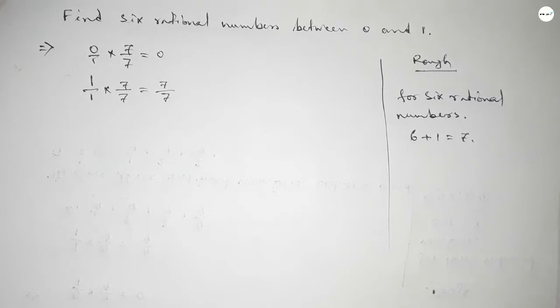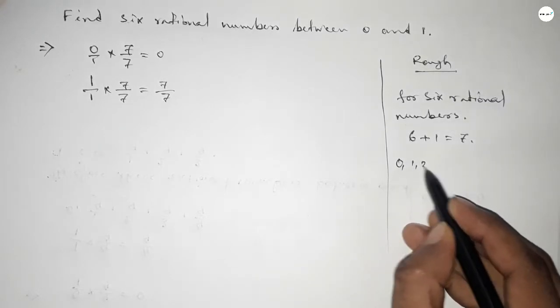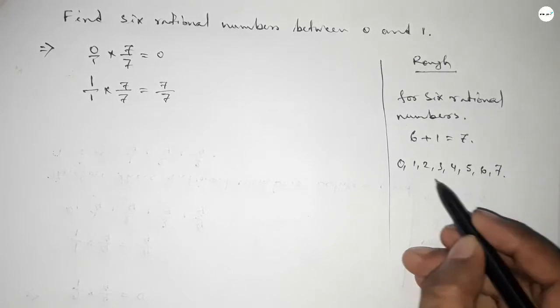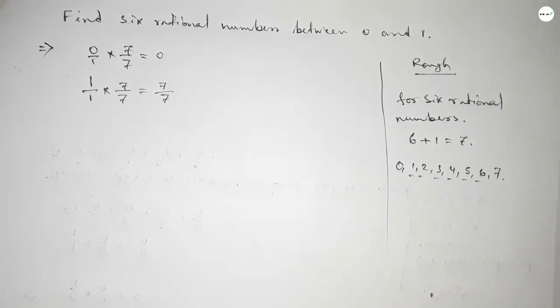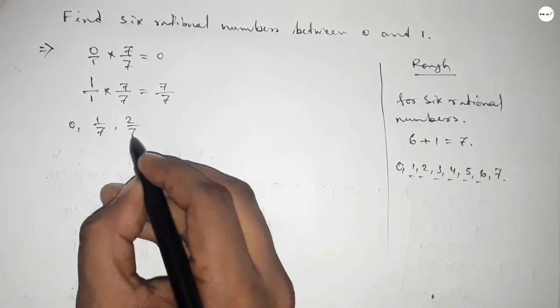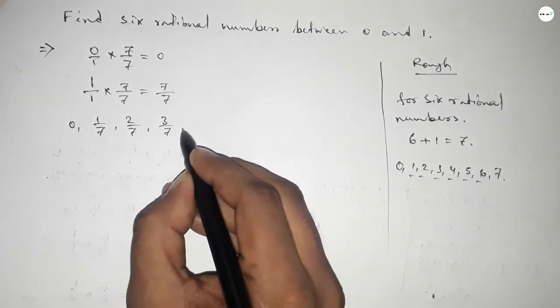Between 0 and 7, we can find six natural numbers, and from these natural numbers we can form six rational numbers. So here all the rational numbers are: 0, 1/7, 2/7, 3/7, 4/7, 5/7, 6/7, and 7/7.